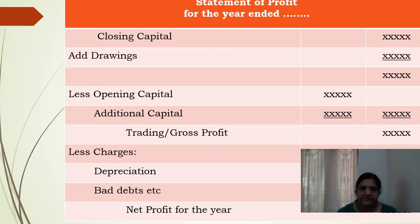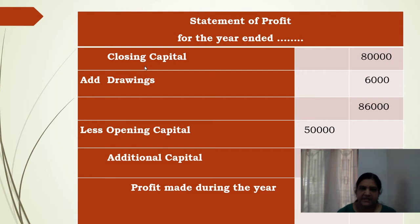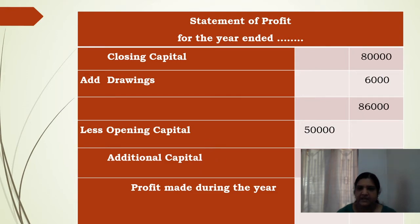The format is: closing capital, then add drawings, less opening capital, less additional capital — you get gross profit. From that, deduct various charges like depreciation and bad debts, and the final result is net profit. So: closing capital is ₹80,000, add drawings ₹6,000 — total ₹86,000. Less opening capital ₹50,000 and additional capital ₹10,000, totalling ₹60,000. Deducting ₹60,000 from ₹86,000 gives the profit for the year — that is ₹26,000.